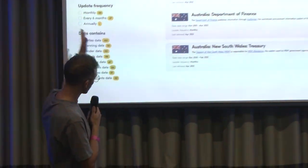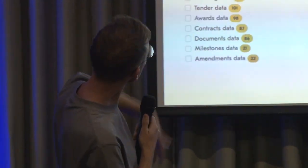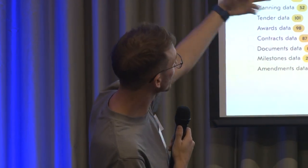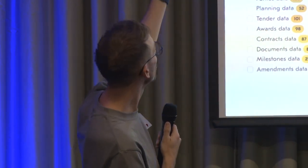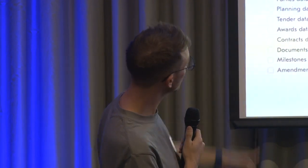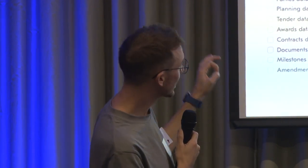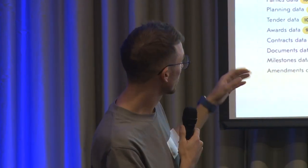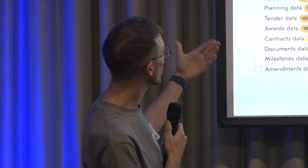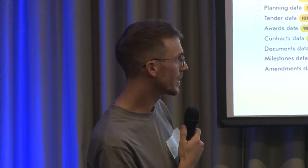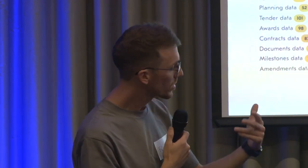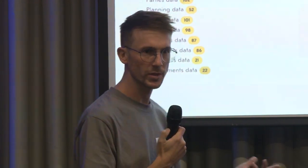We also have a filter menu on the left of the screen, where we can filter alphabetically the different publications, also by date range, by update frequency, and by selecting the information that the different datasets contain. For instance, if you want to work just with the contract information, or just with the tender stage of the contracting process, you can filter it here.